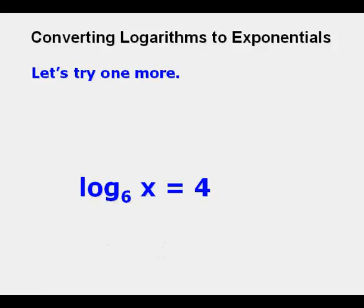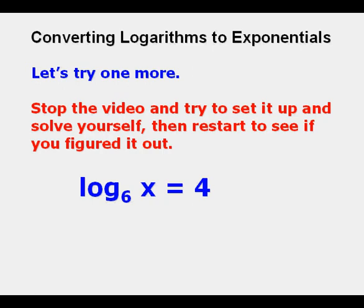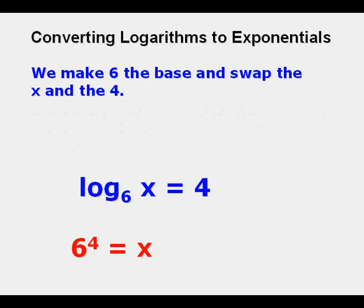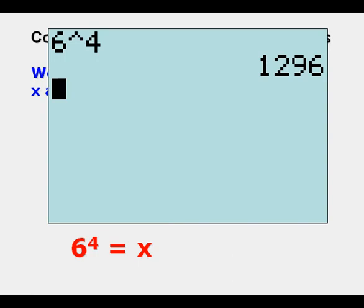Now let's try one more. Log base 6 of x equals 4. I'd like you to stop the video and try to set it up and see if you can solve it yourself. Then restart it to see if you figured it out. We make 6 the base and swap the x and the 4. So it becomes 6 to the power of 4 equals x. And so that becomes 1296.